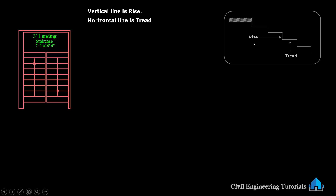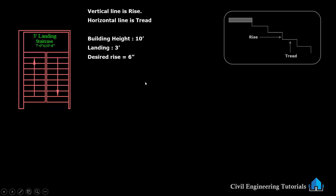Here you can see the vertical line is the rise and the horizontal line is the tread. Building height is 10 feet. Landing is 3 feet — here to here, this is landing 3 feet. Desired rise I am taking 6 inch. You can take 5 inch, 6 inch or 7 inch. Tread I am taking 10 inch — this is the horizontal line. Here to here, this is tread, and you can see tread on plan. This is 10 inch.